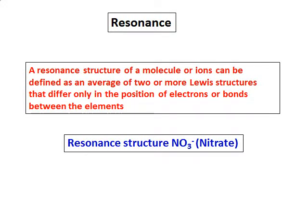This video focuses on the resonance structure of nitrate ion. A resonance structure is a combination of two or more Lewis structures that differ only in the position of bonds and electrons. The compound or ion is represented by both structures.